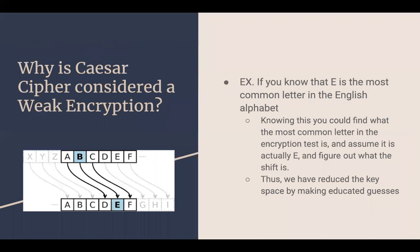Why is it considered weak encryption? If you know that E is the most commonly used letter in the English alphabet, you can scan the ciphertext, see which letter is most frequently occurring, and use that intuition to crack the code. You can figure out what the alphabet is shifted by, reducing the key space with an educated guess without brute forcing the algorithm.